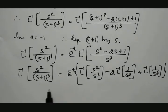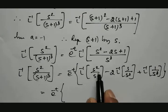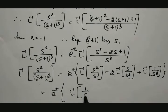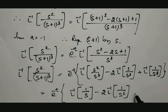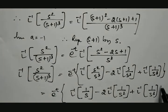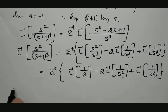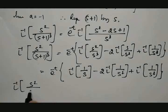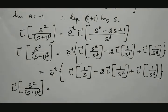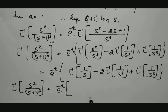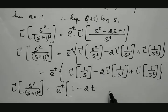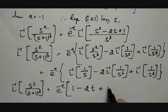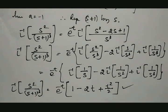Therefore, simplifying: that equals e^(−t) times [inverse Laplace of 1/s  minus 2 times inverse Laplace of 1/s²  plus inverse Laplace of 1/s³], which gives e^(−t) times [1 − 2t + t²/2].